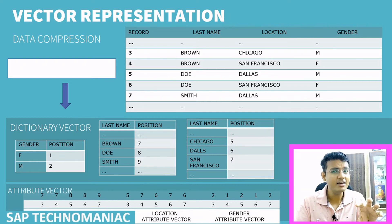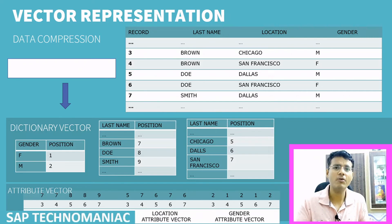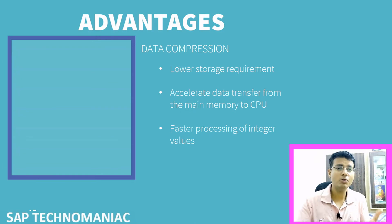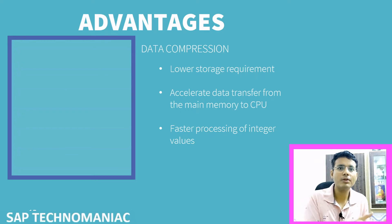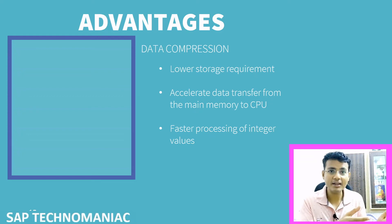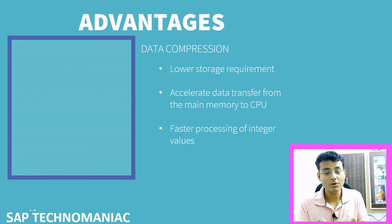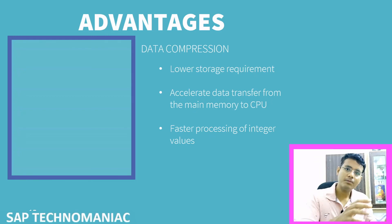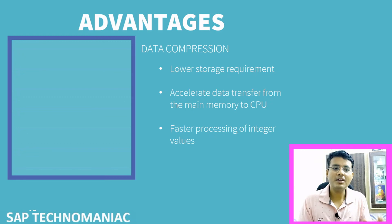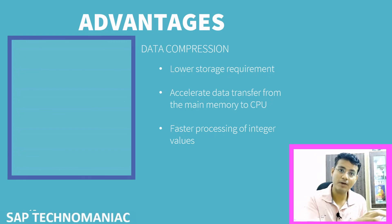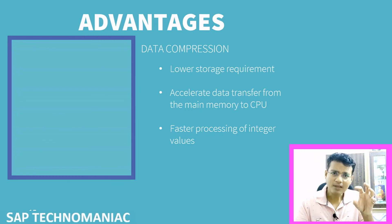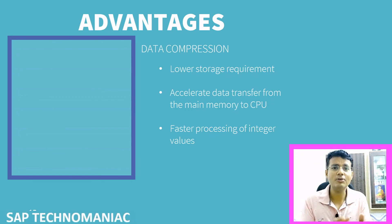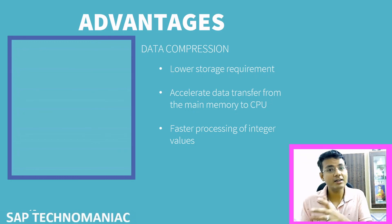To summarize how compression works in SAP S/4HANA: first, it requires lower memory space since we use RAM. We need a lesser amount of main memory to store the data. Second, when processing data, we take it from main memory and put it into the CPU — if the data is compressed, the transfer is faster. Third, since data is stored as integers, comparison and calculations are done much faster than if the data were stored as strings.